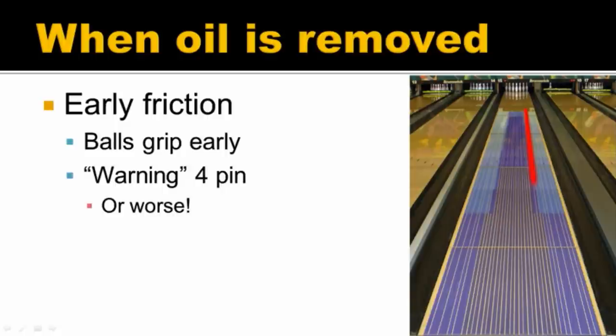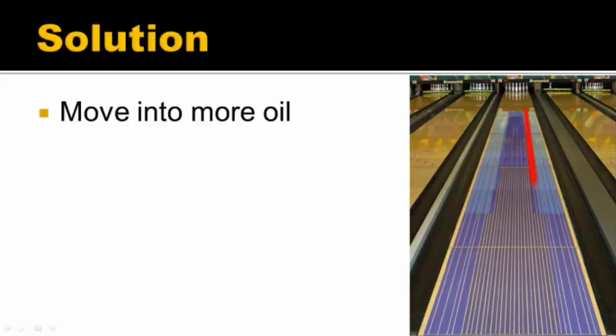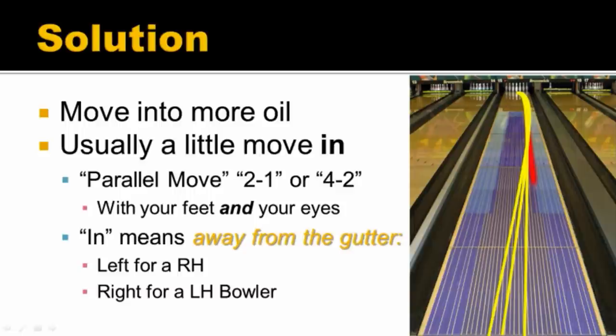But it could be worse — a 4-9 or a 4-6 or something nasty like that. The usual culprit is people throwing heavily sanded bowling balls, or people with high rev rates, because those two things remove oil much more quickly. The solution when you see early friction is to move into more oil. It's usually a little move in, although it varies — if your rev rate is higher, the move may be bigger. It's a parallel move — we're actually opening our angle. We move, say, 2 with our feet and 1 with our eyes, or 4 with our feet and 2 with our eyes. Notice we're usually working in a factor of 2: twice as far with the feet as with the eyes.